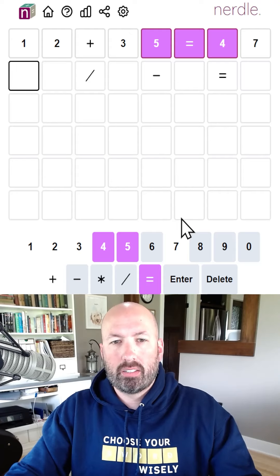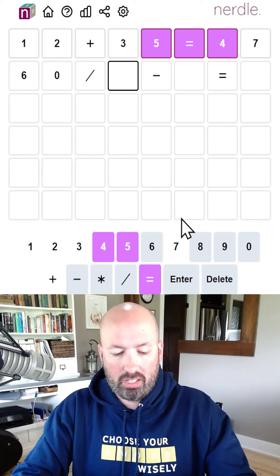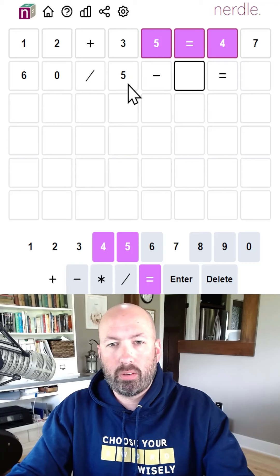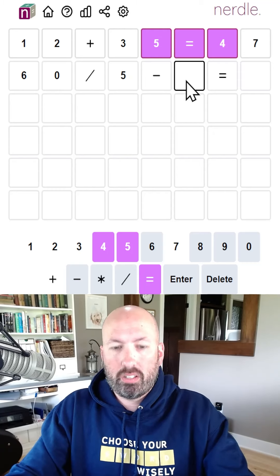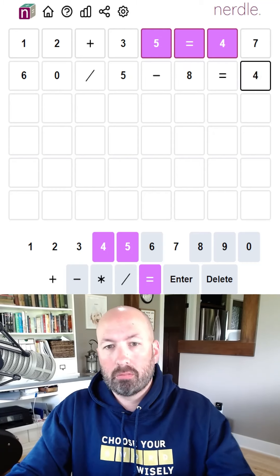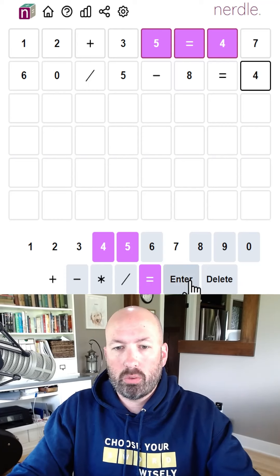Let's do like, I don't know, maybe like 60 divided by five. We need to have a five in there. That would get us 12. And then we could subtract eight to get four. Seems good. Let's go with that one.